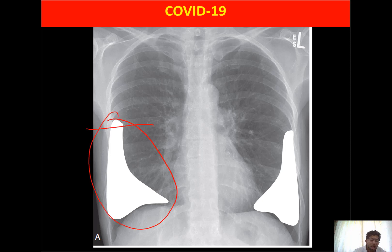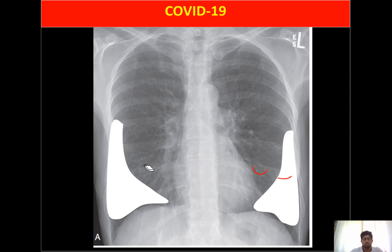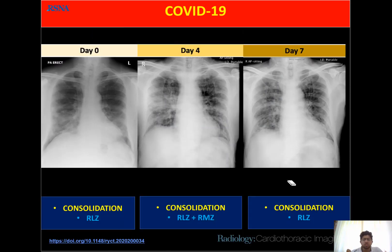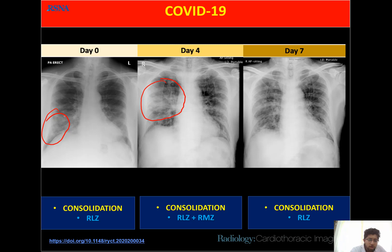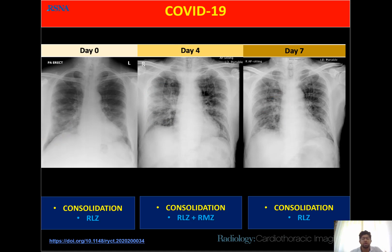The disease shows peripheral zone and lower zone involvement with bilateral symmetrical distribution. Looking at a patient's chest radiograph — a patient who had traveled to Wuhan, China where the pandemic started — three chest radiographs were taken on day zero, day four, and day seven. On day zero, consolidations are seen in the lower zone. By day four, consolidation appears in the mid zone, and on day seven there was no consolidation in the perihilar region.